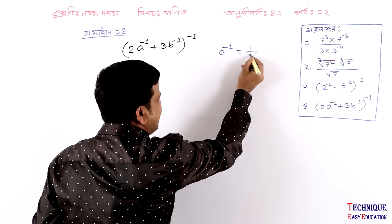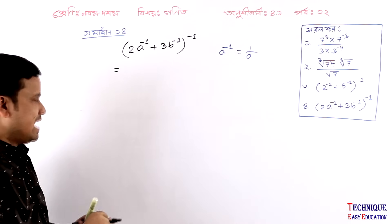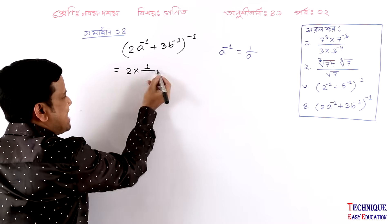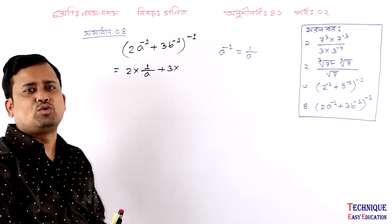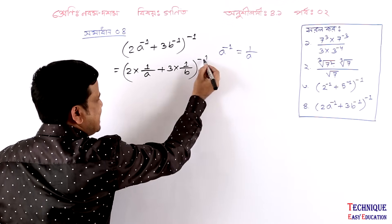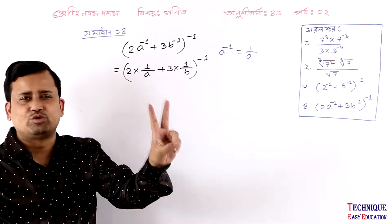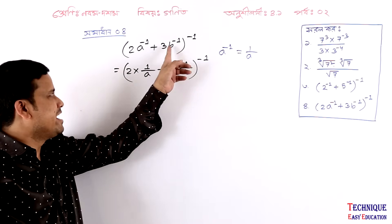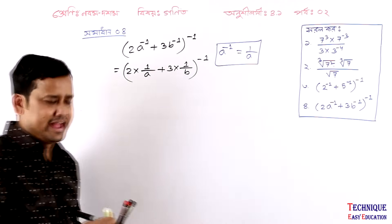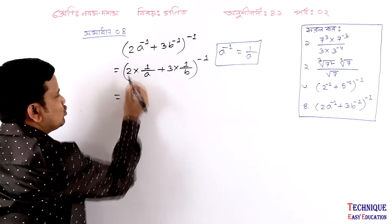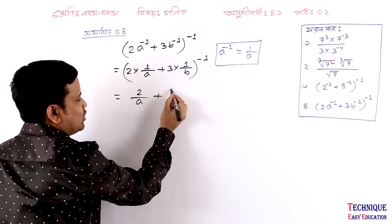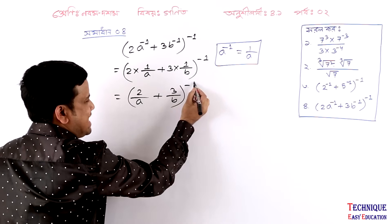A to the power minus 1 is 1 by A. Now, we will have 2 into a to the power minus 1 — that is 1 by a. Plus c into b to the power minus 1 — that is 1 by b. And the power minus 1: 1 by a, b to the power minus 1 is 1 by b. Because the power minus 1 gives 1 by a. Now, let's see: 2 by 1 — so 3 by a plus 6 by b. Then the power minus 1.